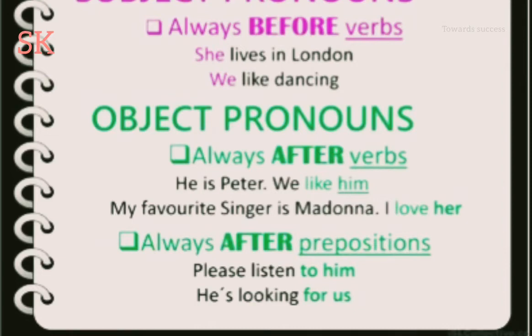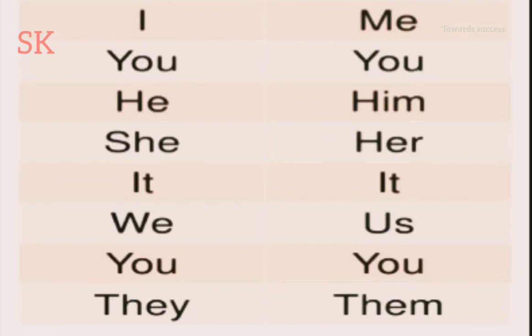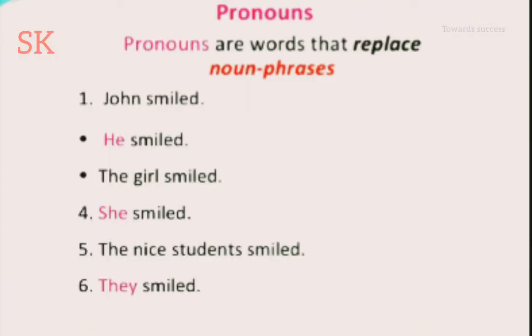Subject pronouns and object pronouns: if a noun is before the verb, we select a pronoun from the list of subject pronouns. If the noun is after the verb or any preposition, we select a pronoun from the list of object pronouns. I, you, he, she, it, we, you, they are subject pronouns. Me, you, him, her, it, us, you, them are object pronouns.